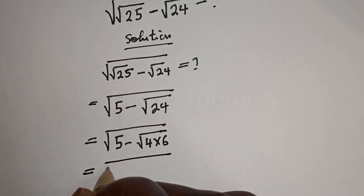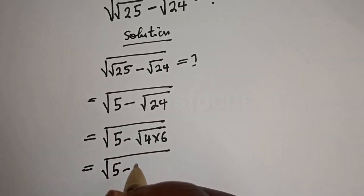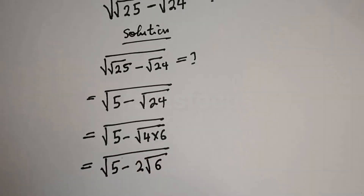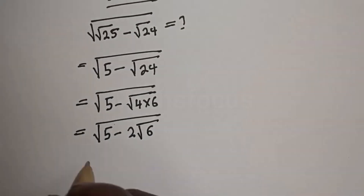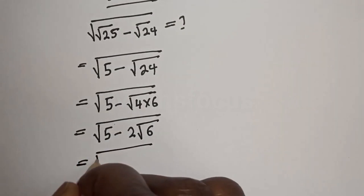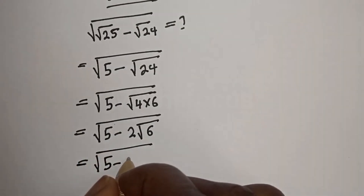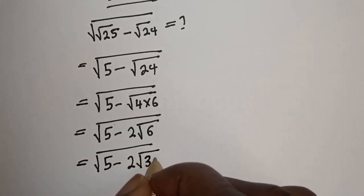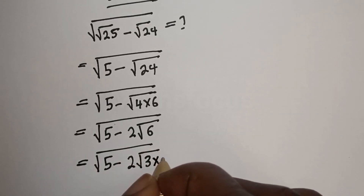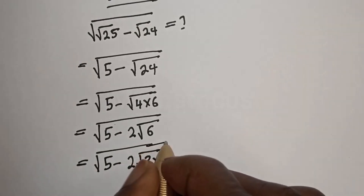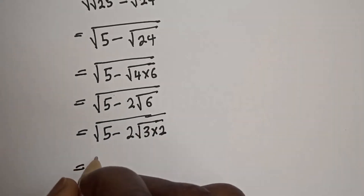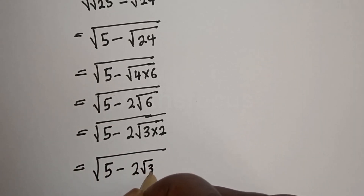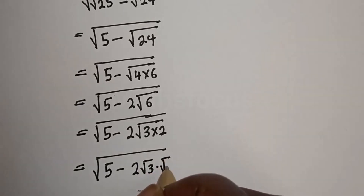This equals square root of (5 minus 2 square root of 6). Since square root of 4 is 2, we have square root of (5 minus 2 square root of 6), which equals square root of (5 minus 2 times root 3 multiplied by root 2).